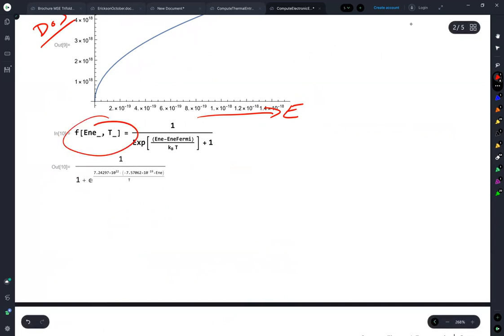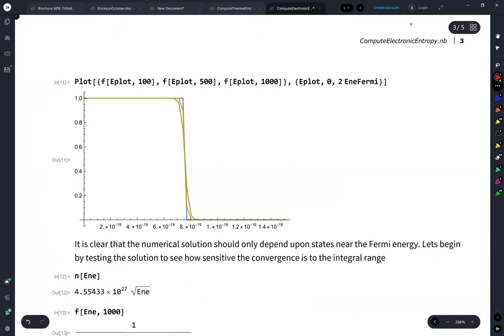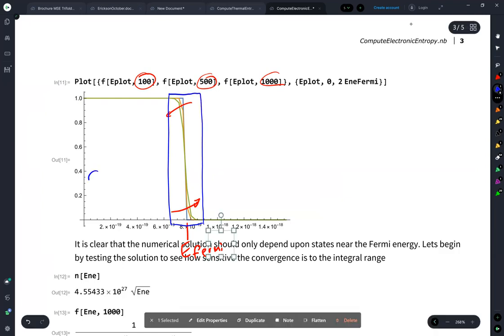This is our Fermi-Dirac distribution. Our Fermi-Dirac distribution looks like this. This is E Fermi. And you can see that as I increase the temperature 100, 500, 1000, the curves smear out a little bit. So ultimately, the only place that we have an entropic contribution is going to be in here. That's where the disorder is. That's where the disorder comes from.